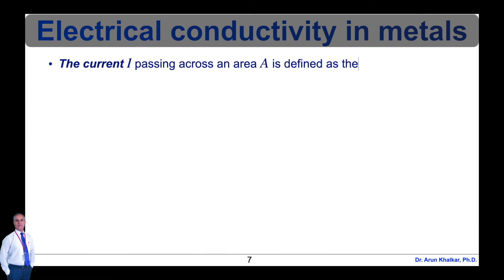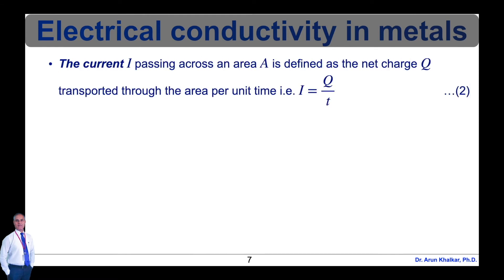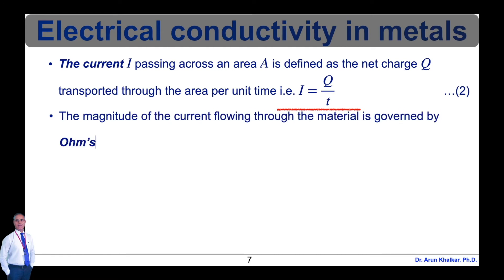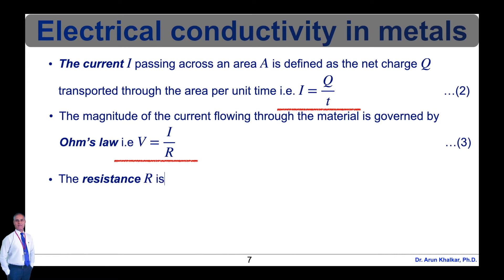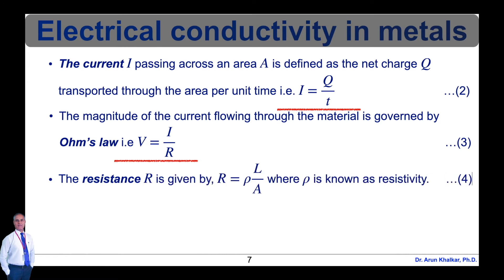The current I passing across an area A is defined as the net charge Q transported through the area per unit time, that is I = Q / t — equation 2. The magnitude of current flowing through the material is governed by Ohm's law: V = I × R — equation 3. The resistance R is given by R = ρ × L / A, where rho is the resistivity — equation 4.